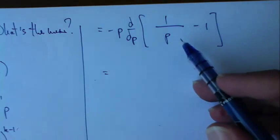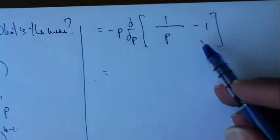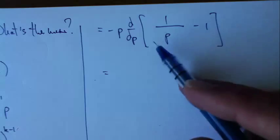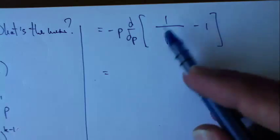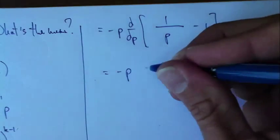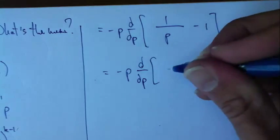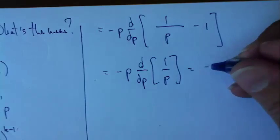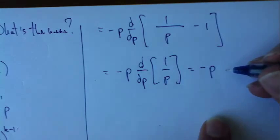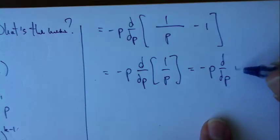And now, the derivative of all this is just the same thing as the derivative with respect to p of 1 over p. So that's negative p times the derivative with respect to p of p to the negative 1.